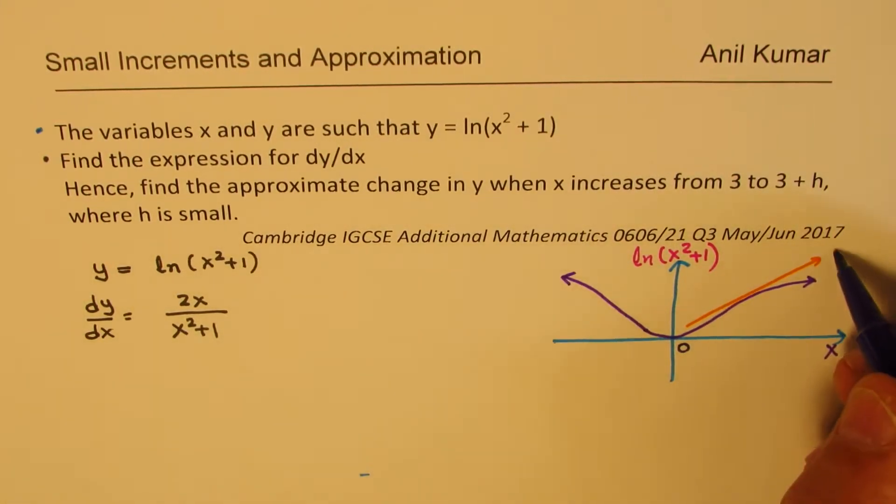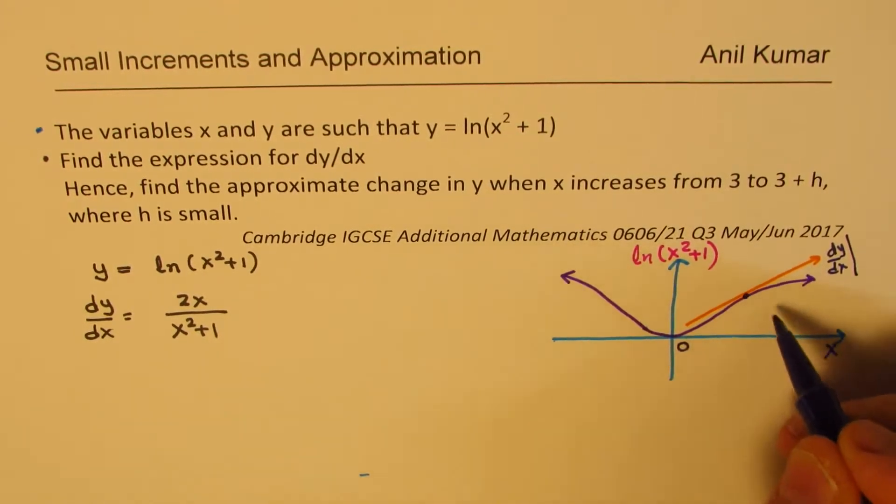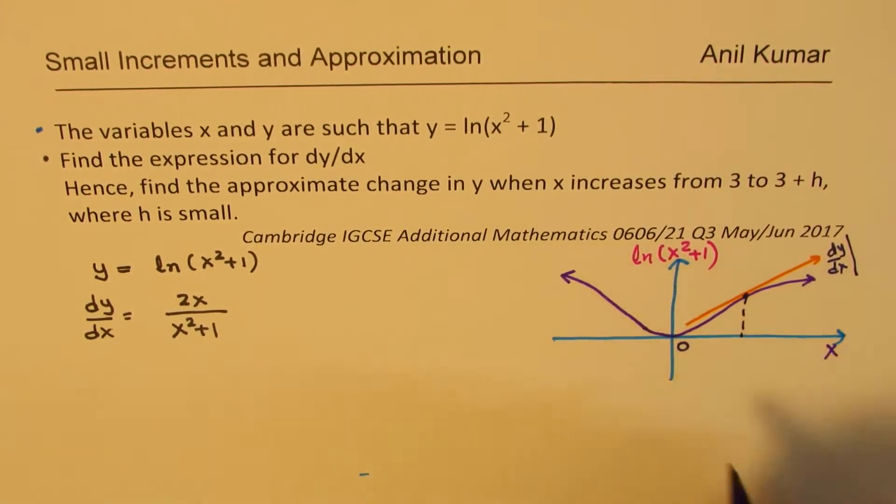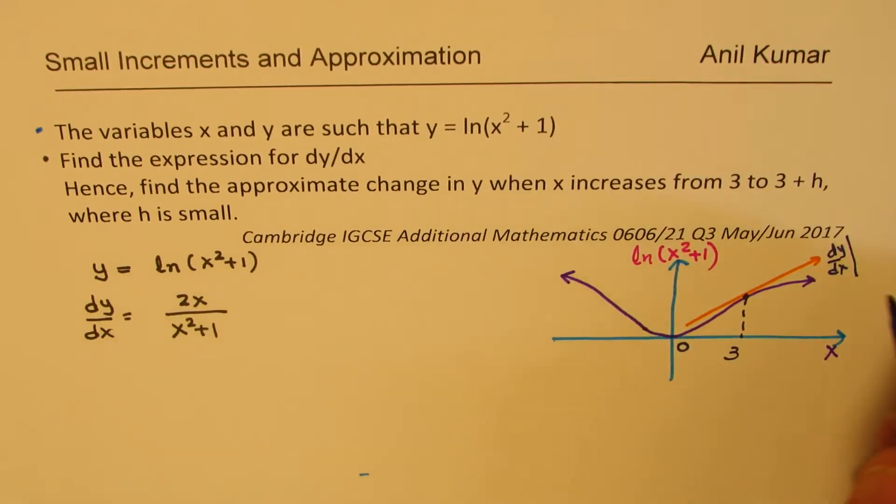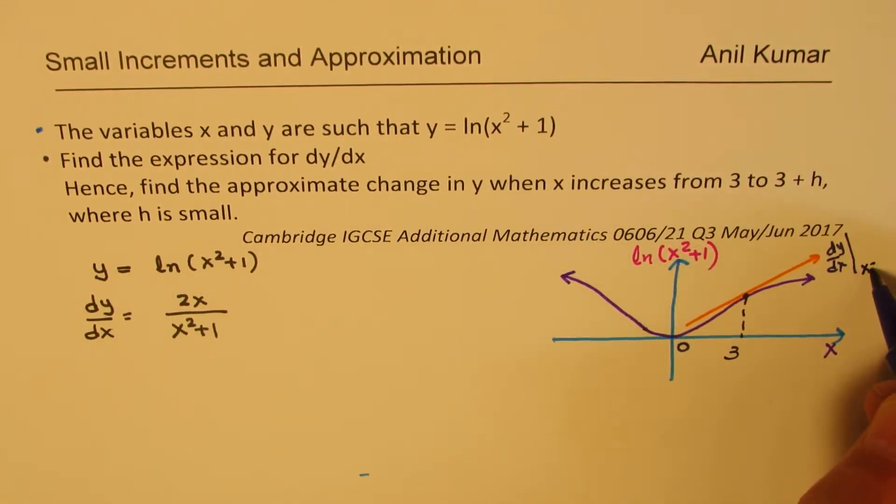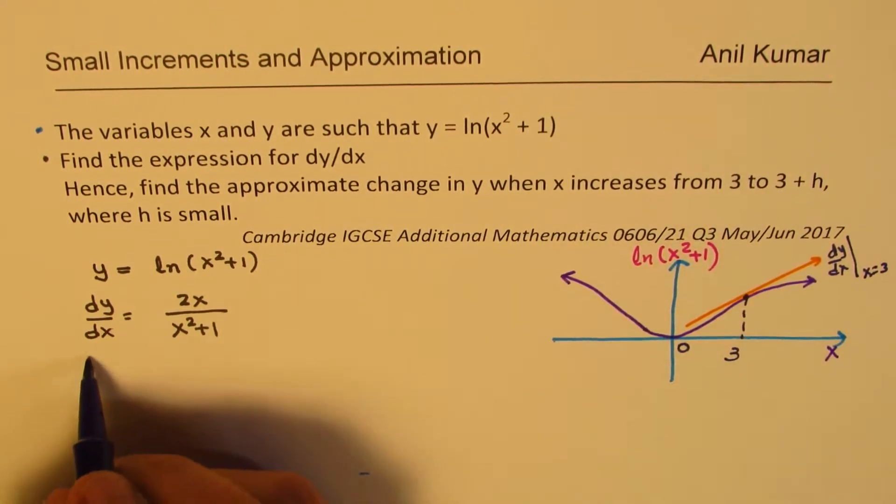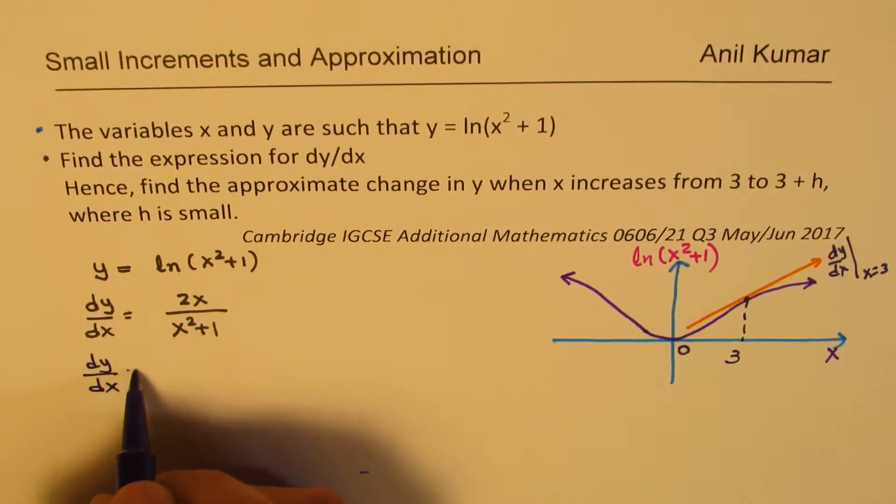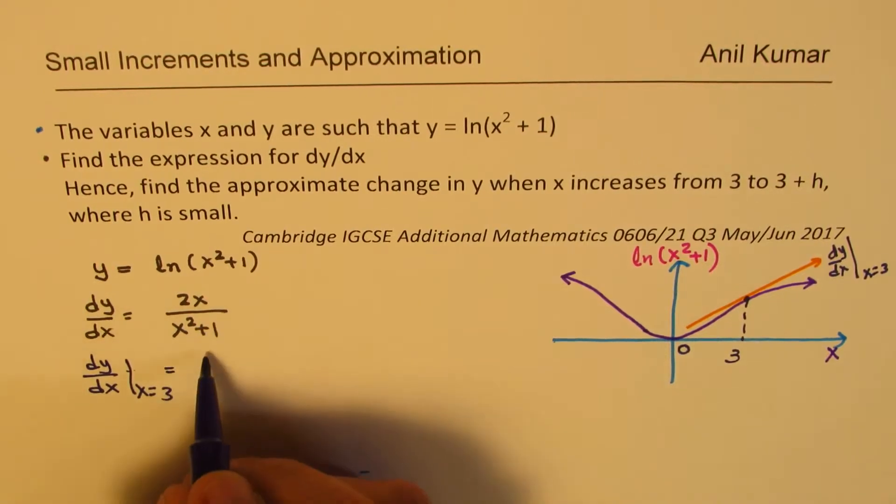Let's say we are looking for some value 3 which is somewhere here. I'll just draw this line. This line represents for me dy/dx. We want to find this derivative at the point which is 3 for us, so at x equals 3.